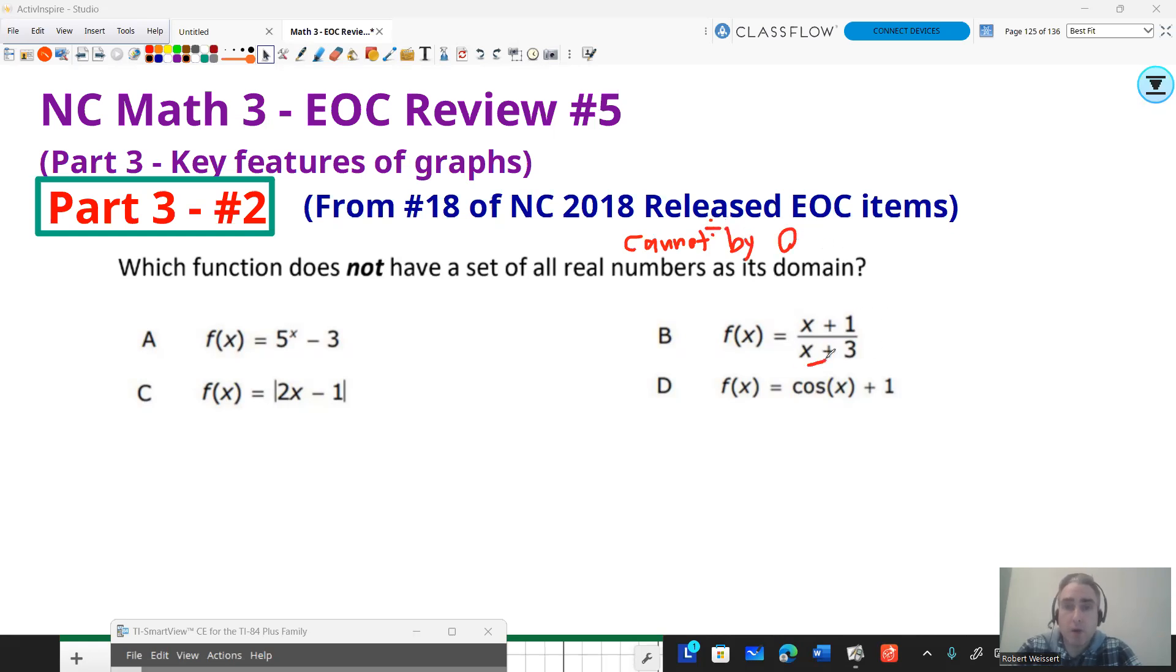Since you can't divide by zero, well, this has a fraction in it. So if I set x plus three equal to zero and I subtract three from both sides, you get negative three, correct? So that means x cannot equal negative three. That means my domain is all real numbers except for negative three. That means b is my answer.